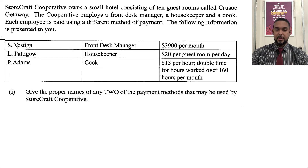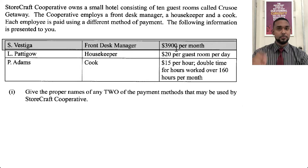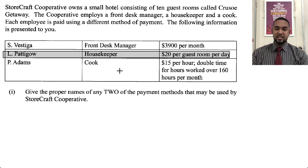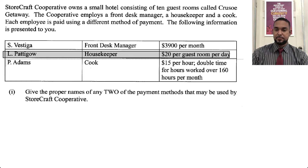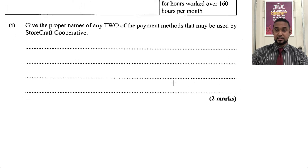S. Vestiger is earning $3,900 per month — that is a monthly salary. El Patigal at $20 per room per day — that is piece rate, as he or she is paid for every room cleaned or prepared. P. Adams is paid $15 per hour — that's an hourly rate or hourly wage, and also overtime. That was two marks, a mark for each method.